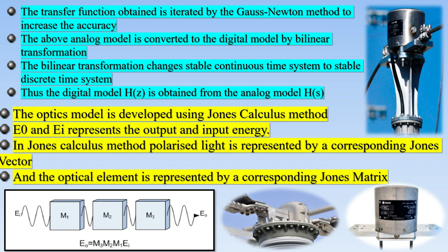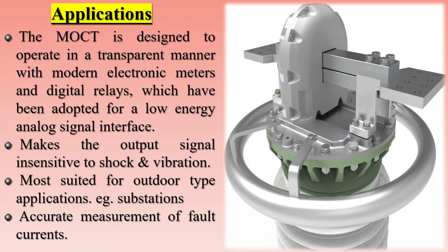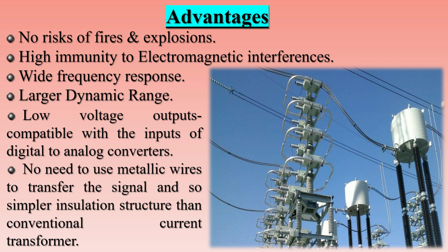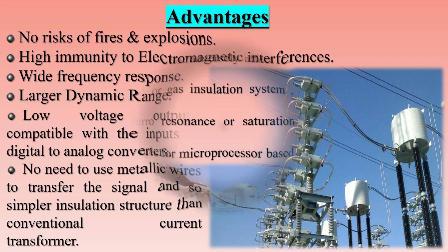Optical Current Transformers (OCTs) and conventional Current Transformers (CTs) are both used to measure current, but operate on different principles. A CT operates via electromagnetic induction — a changing current in one coil induces an EMF in another coil by varying the magnetic flux. An OCT uses light to measure current, employing an LED and photodetector to detect magnetic flux changes. Regarding output, CTs reduce high-voltage currents to a lower value for monitoring with a standard ammeter, while OCTs can have a digital output according to the IEC 61850 standard.